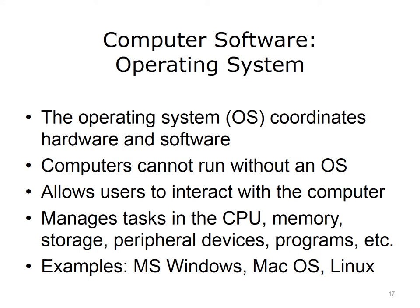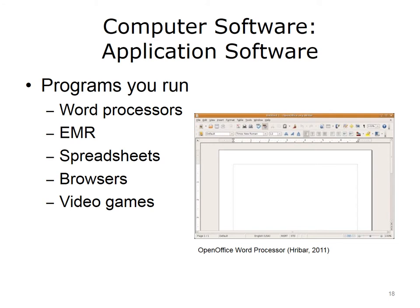There are many operating systems that you might be familiar with. A very common one is Microsoft Windows. You may have also seen operating systems that run on Macintosh computers. And you may have even seen Linux, which is the open-source version of the operating system known as Unix. The other type of computer software is called application software, also known as programs. Applications are what make computers useful for everyone. They are the reasons we use our computers for work, social networking, and entertainment. Some examples are word processors, electronic medical records or EMRs, spreadsheets, web browsers, and video games.